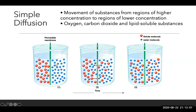If we look at this beaker, this is a permeable membrane, which means things can get through it easily — anything can pass through it. In simple diffusion over time, the red molecules and blue molecules will diffuse so that we'll get an equal concentration of the solute and the water molecules.